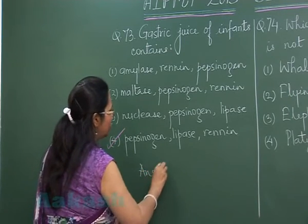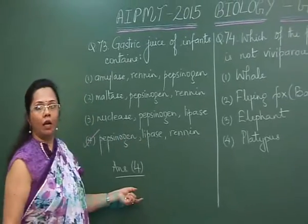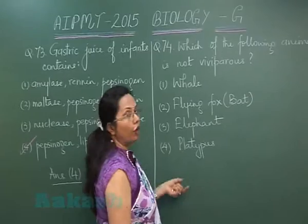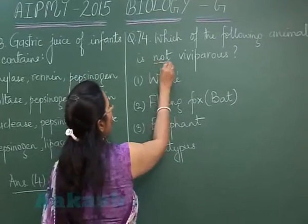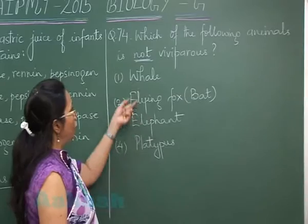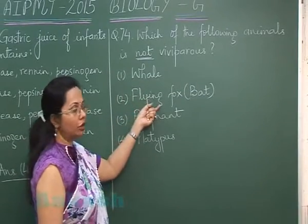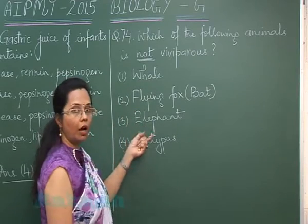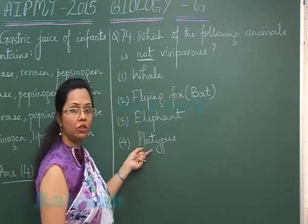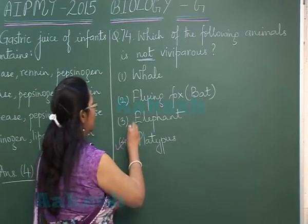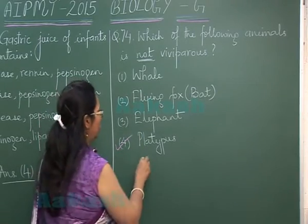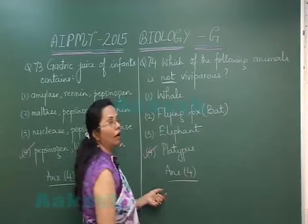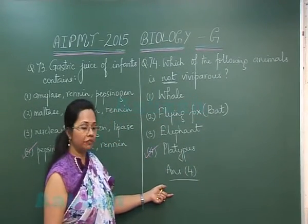Question 74: Which of the following animals is not viviparous? Whale, flying fox (a frugivorous bat), and elephant are all viviparous. Platypus is an egg-laying mammal, so it is not viviparous. The answer is the fourth option — platypus.